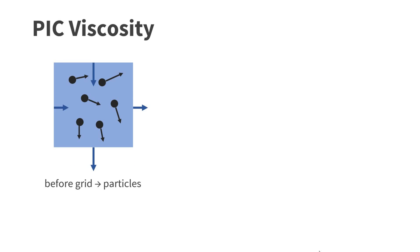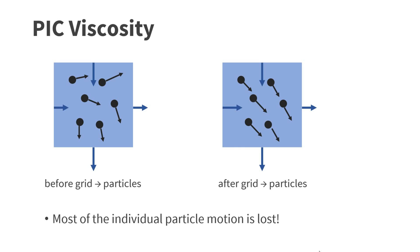Unfortunately, the PIC method introduces quite a bit of numerical viscosity. Here we see the situation in a cell before transferring the velocities stored in the grid back to the particles. Each particle has its own independent velocity. However, after the transfer, the particle velocities are smoothed because the velocity field stored in the grid has far less degrees of freedom than the velocities stored on the particles. So after the transfer, most of the individual particle motion is lost.